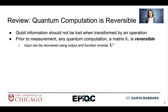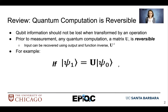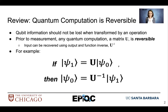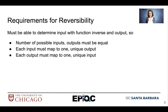What does that mean exactly? That means that input can be recovered using the output and the inverse function U raised to the negative 1. For example, if we have original input psi 0, that'll be transformed by a matrix U to get psi 1. If we take the inverse function U raised to the negative 1 and multiply that by the vector psi 1, we will get our original vector psi 0. The requirements for reversibility are as follows: we have to have the same number of inputs and outputs, each input must map to one unique output, and each output must map to one unique input. These are some of the properties that allow us to reverse quantum computation.